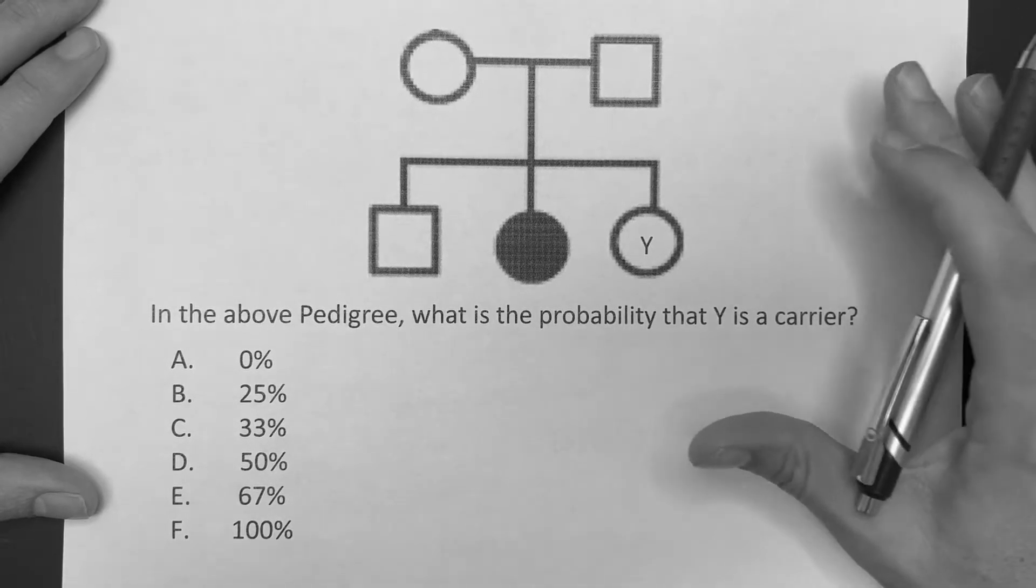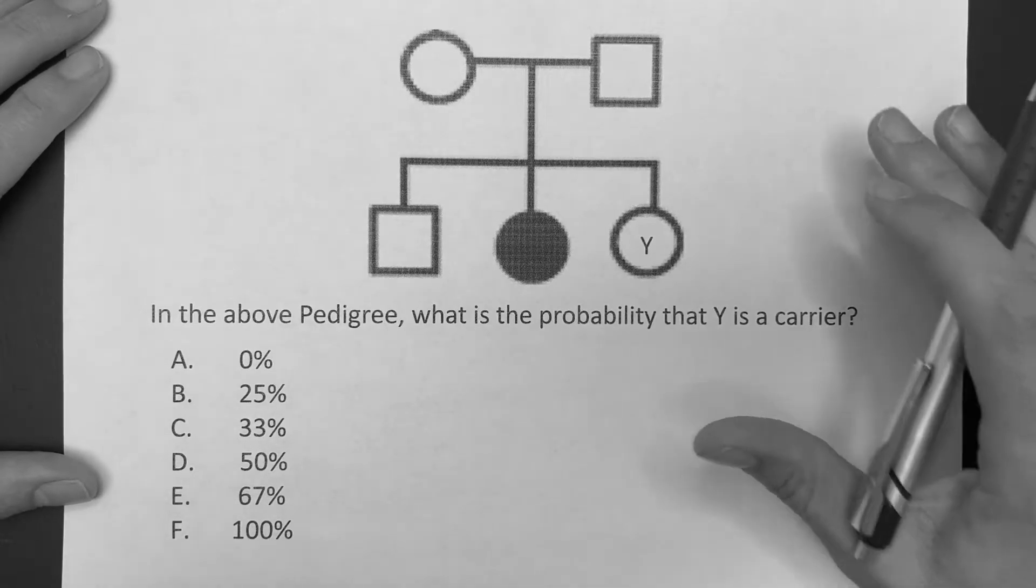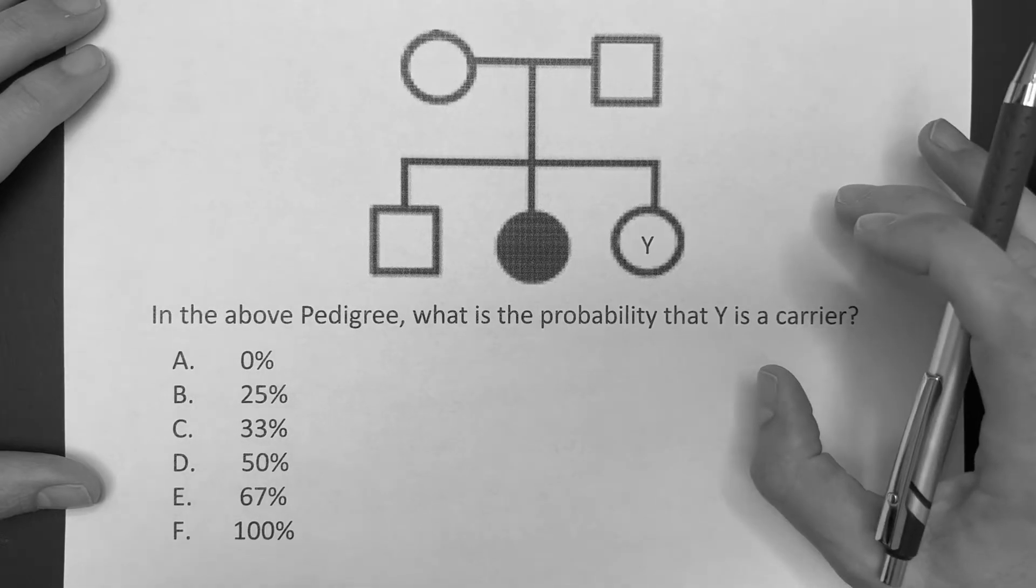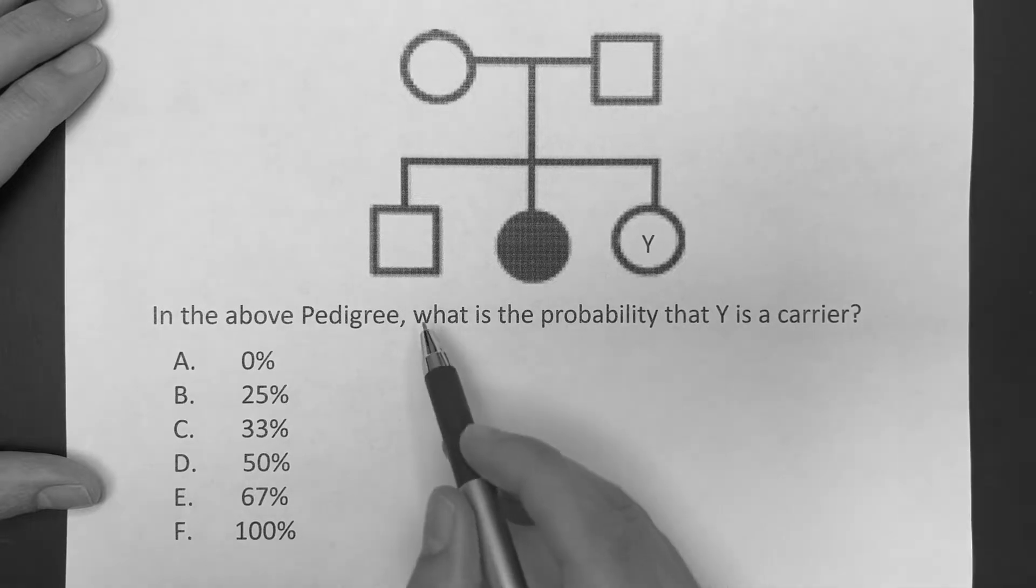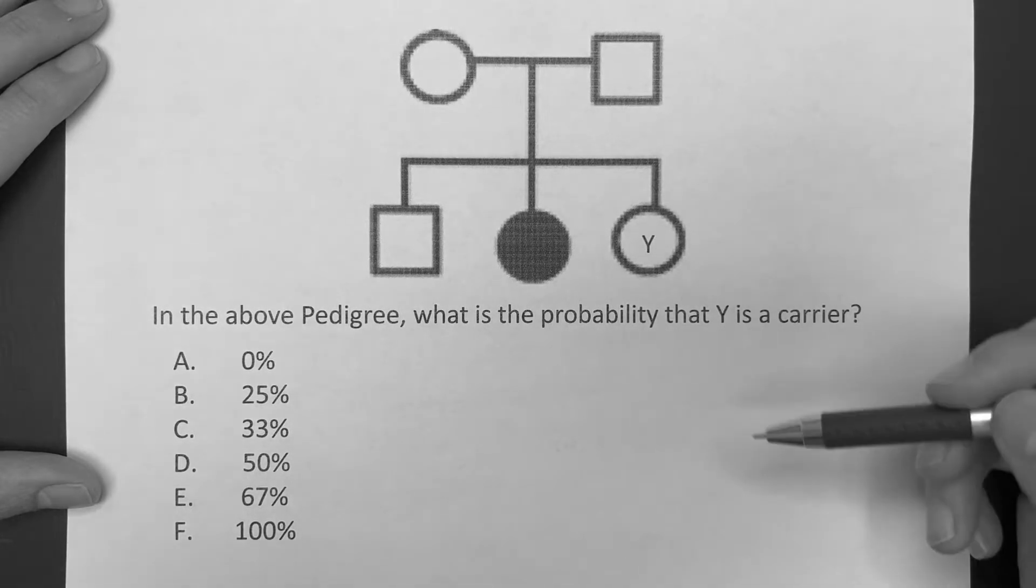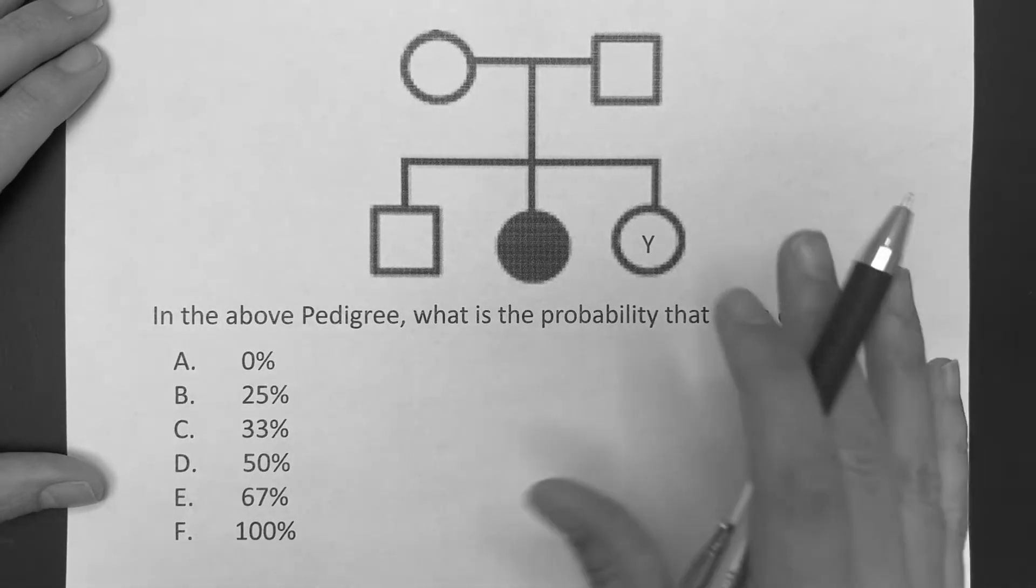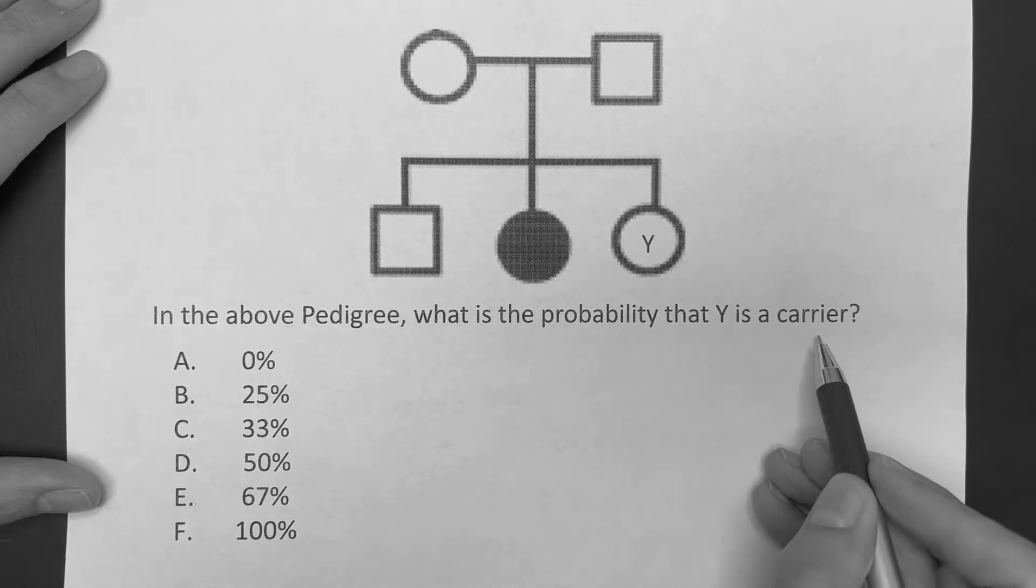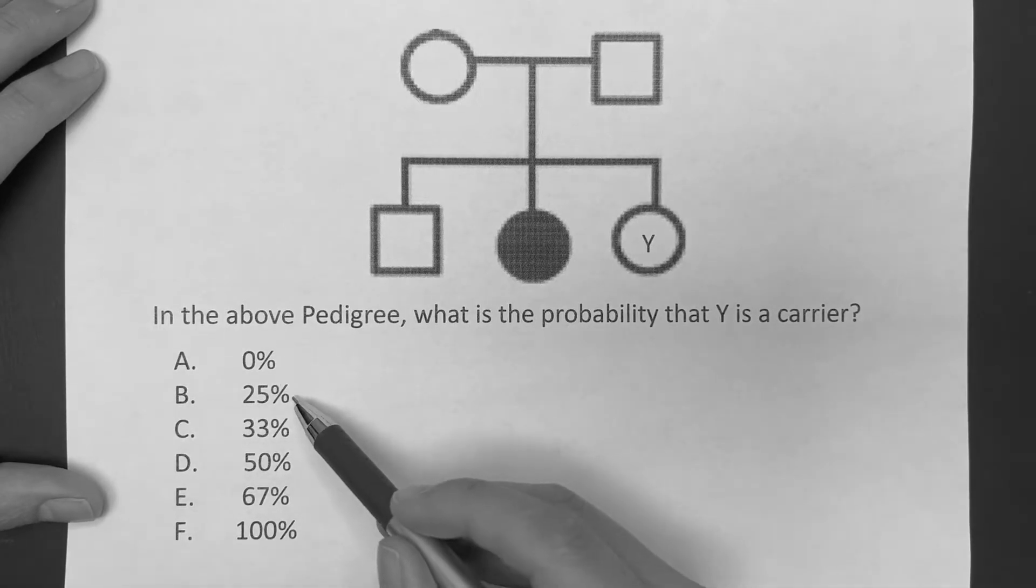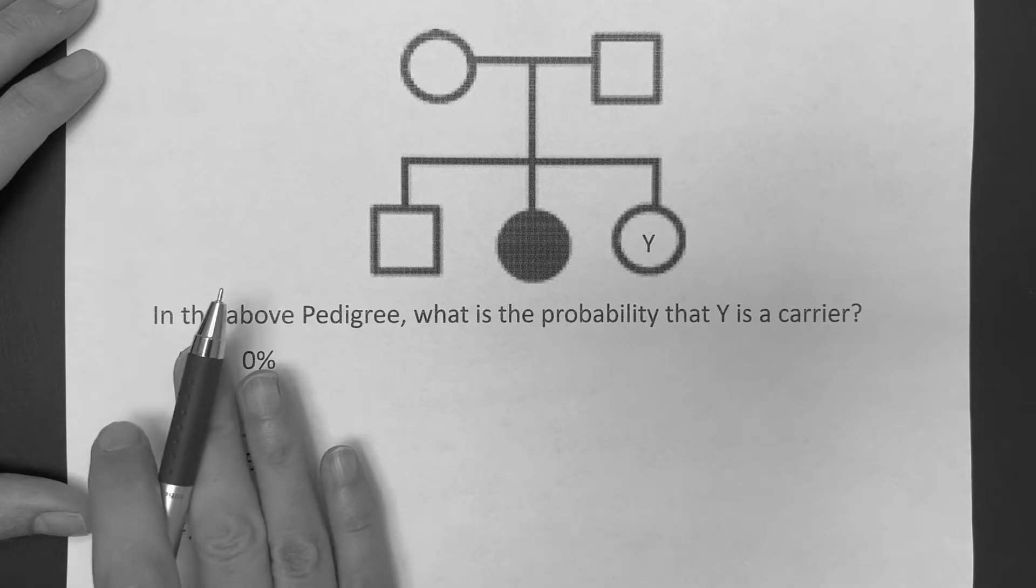Try this problem, try to get the answer before I get to it, even pause the video and try to work it yourself because this is a critical problem. If I was making the exam, this is one I would use. I would just change how I word the question. But if you can work through this, no matter how I word it and get all these right, then you're ready. It says in the above pedigree, what is the probability that Y is a carrier? Is it A, 0%, B, 25%, C, 33%, D, 50%, E, 67%, and F, 100%. We got basically every scenario in the book, so you definitely can't guess on this one.